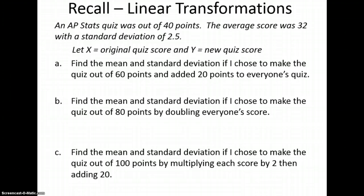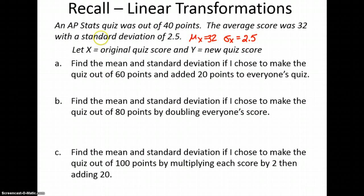We have a quiz here out of 40 points. The average was a 32, and the standard deviation was a 2.5. Let X be the original quiz score, and Y is going to be the new quiz score. Find the mean and standard deviation if I chose to make the quiz out of 60 points by adding 20 to everyone's quiz.